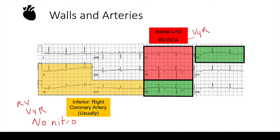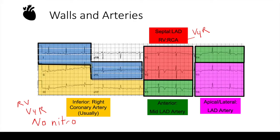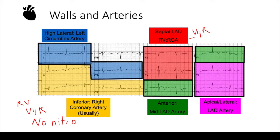If V1 and V2 have ST elevations and V3 and V4 also have ST elevations, then V3 and V4 represent the anterior leads, supplied by the mid LAD. V5 and V6 are the apical leads, supplied by the distal LAD. If V5 and V6 show ST elevations along with leads 1 and AVL, this means the patient likely has lateral wall involvement. If there are isolated ST elevations in 1 and AVL, that is high lateral, meaning most of the ischemia is due to the left circumflex artery and not necessarily the LAD.